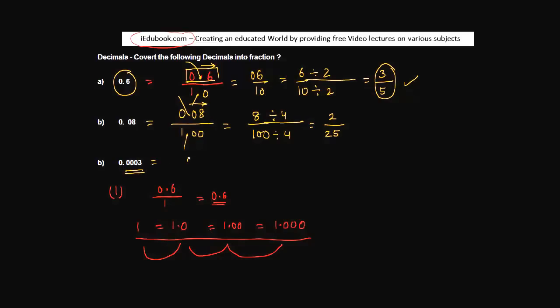Again, similar for this one. 0.0003. What do we do? Divide it by 1. Put in a decimal point. Put in as many zeros as are the number of digits after 0, 1, 2, 3, 4.